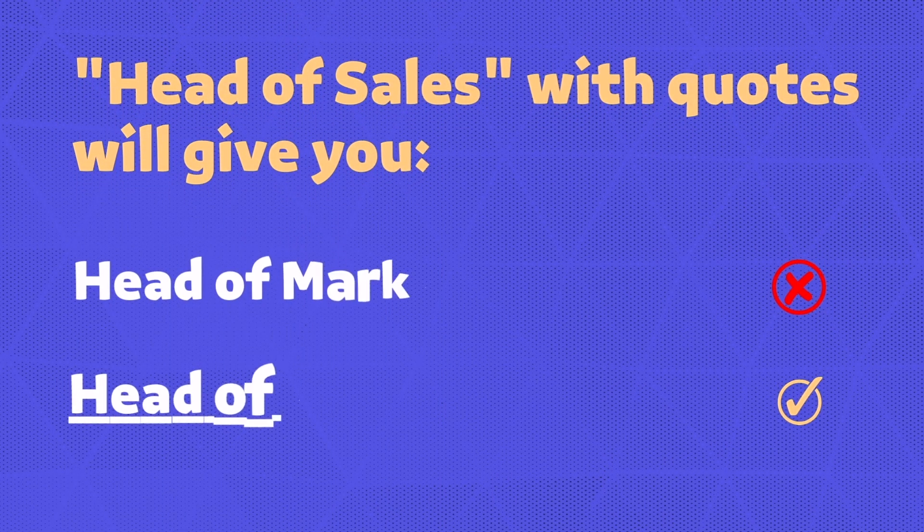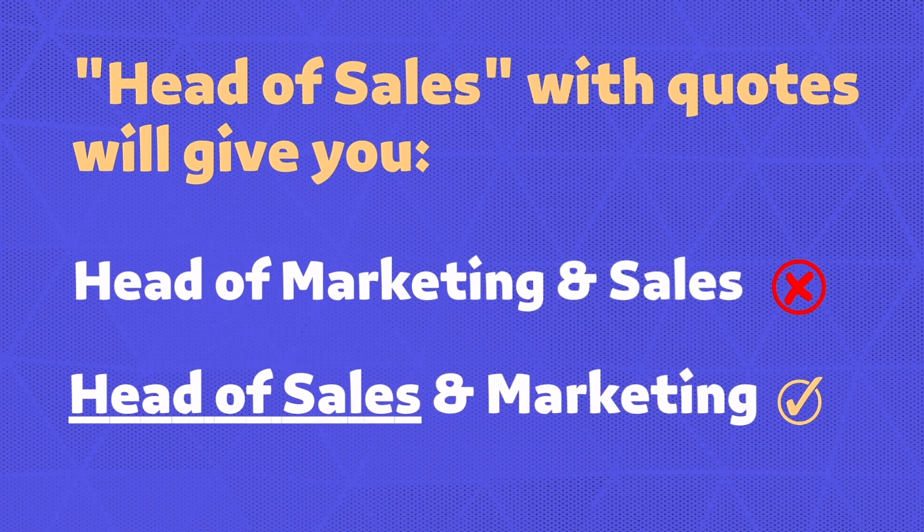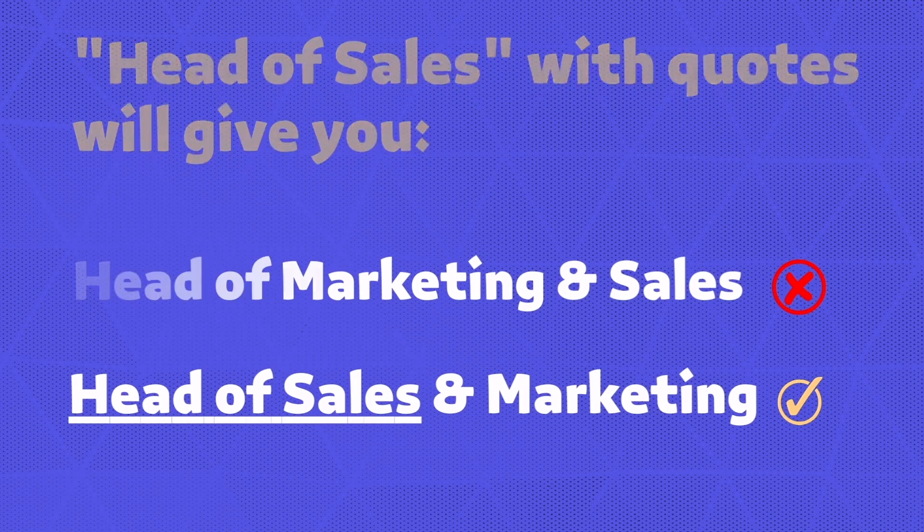For example, 'head of marketing and sales' will disappear from the results, but 'head of sales and marketing' will remain because the three keywords are next to each other. This is especially important when using the general keyword search, because if someone is the head of operations and writes 'I really hate sales' in their job description, the profile will appear in your results. So every time you write more than one word in a boolean expression, make sure to add quotation marks around it.